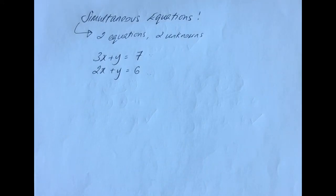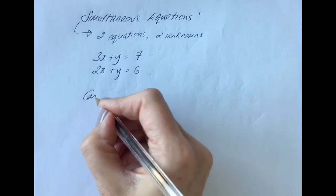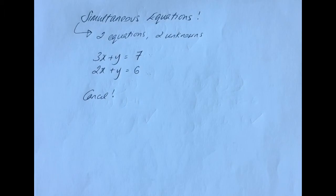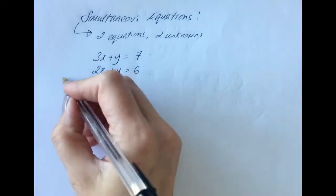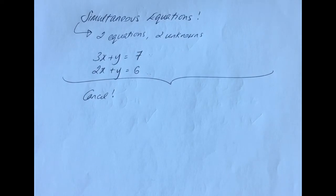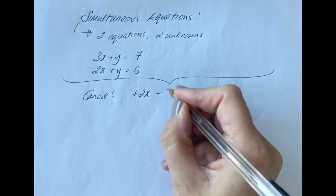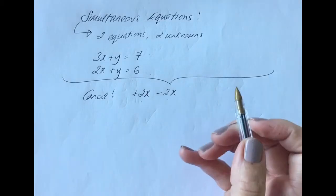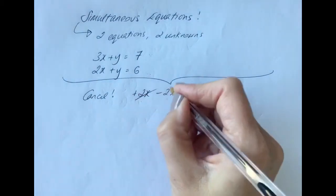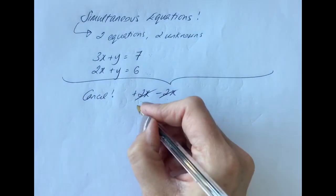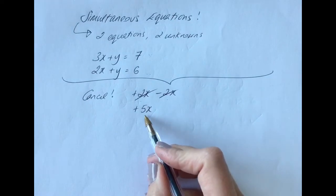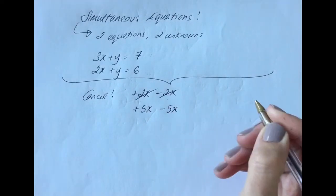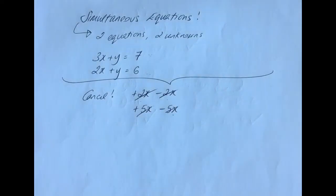The method we're going to use is called the elimination method. To understand it, you need to get clear on when terms cancel, because we need to cancel out either the x's or the y's. For example, if you have a positive 2x and then a minus 2x, 2x take away 2x is zero — it cancels out. Similarly, if you have a positive 5x, you need a minus 5x to cancel it.